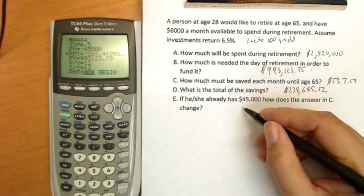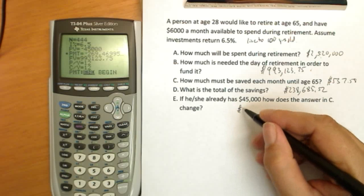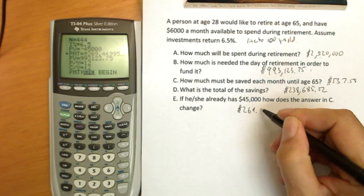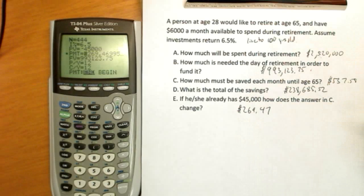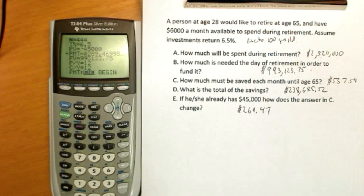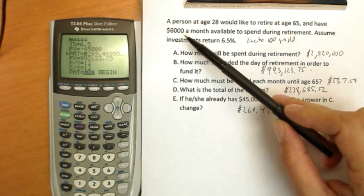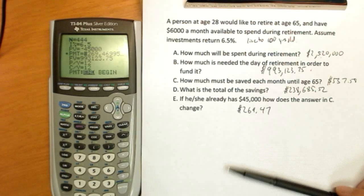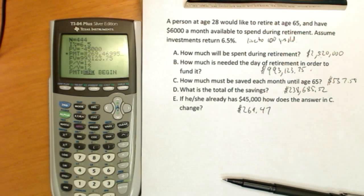In fact, it dropped to $269.47. So you can see that having $45,000 at this age dropped off a significant portion of our monthly savings. That's the power of compounding interest from age 28 to 65 plus all those years until you actually spend it in your $6,000 check. I hope you found this a helpful video. Thank you.